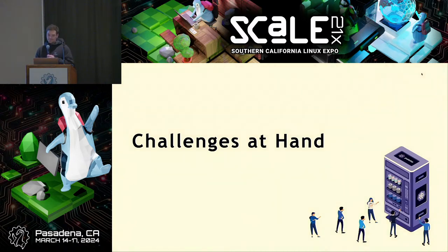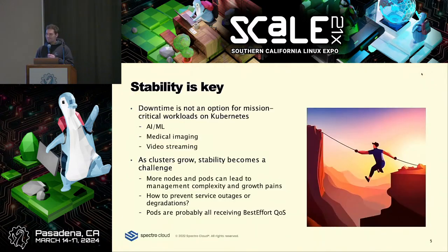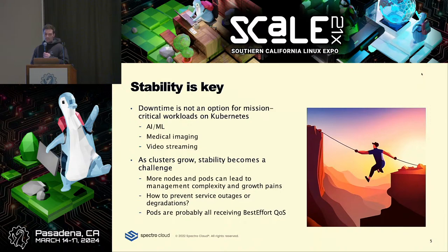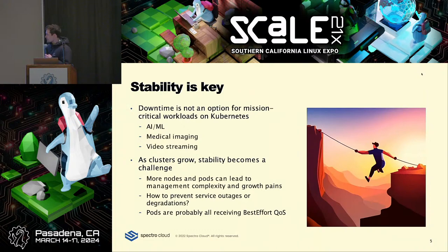So the challenge is at hand. Basically, stability is key, and as everyone knows, with Kubernetes getting more and more traction, we are now seeing production-grade workloads running mission-critical software in a couple of different categories: AI/ML use cases are big, video streaming, gaming platforms running in production, and medical imaging.